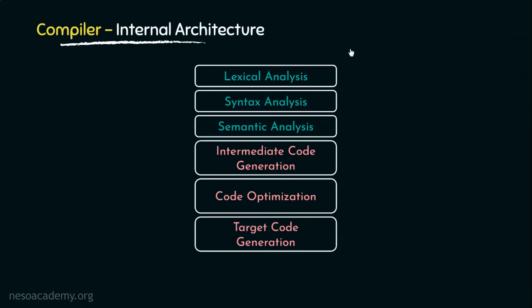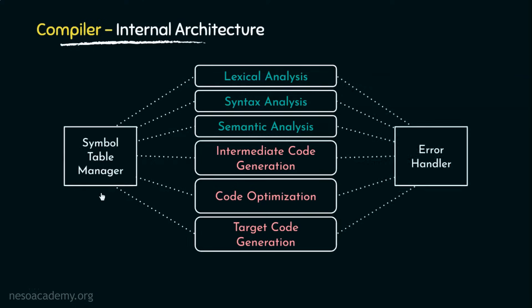In the previous sessions, while studying the compiler's internal architecture, we learned that along with the six phases of the compiler it has two more components: the symbol table manager and the error handler. We have already learned about the symbol table. Today we will mainly focus on the error handler — specifically how it works for the lexical analysis phase. The error handler mainly does three things: error detection, error reporting (generating error reports to the user), and error recovery (implementing a recovery strategy for handling errors).